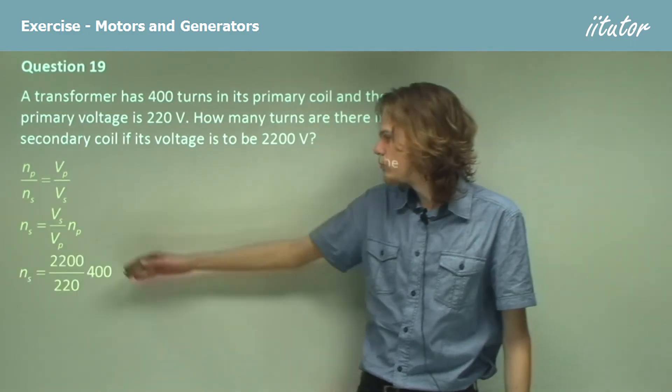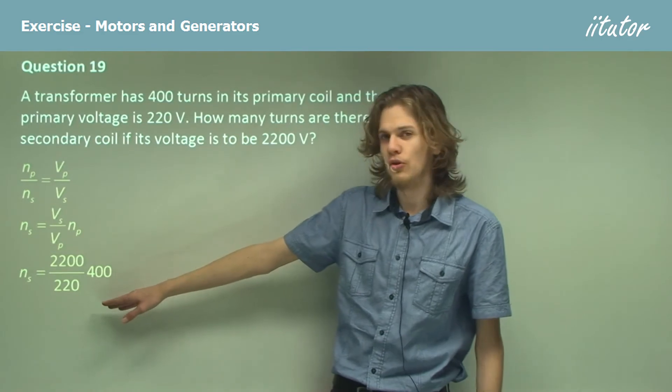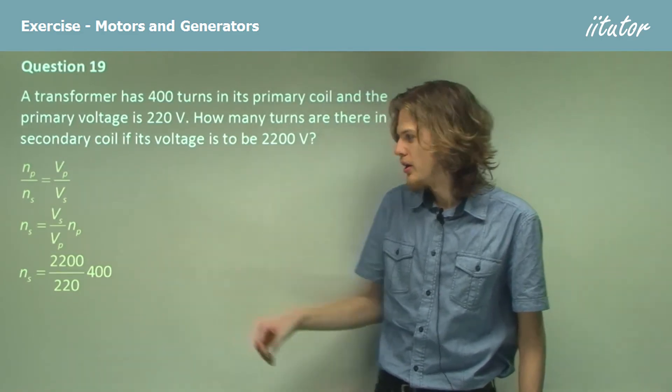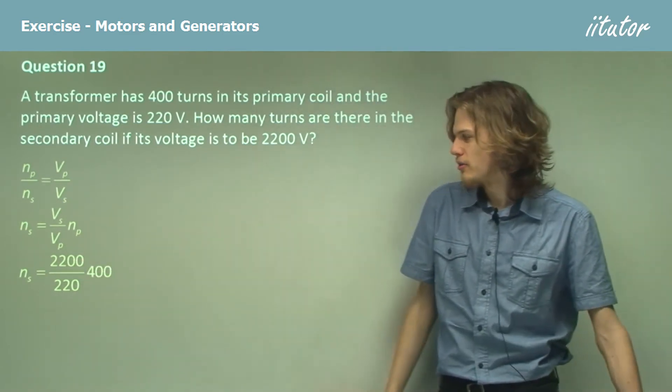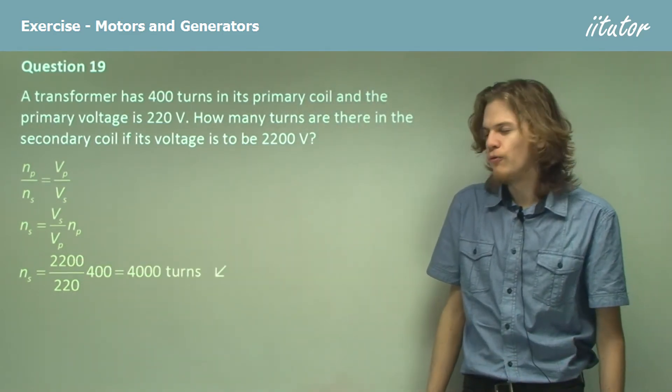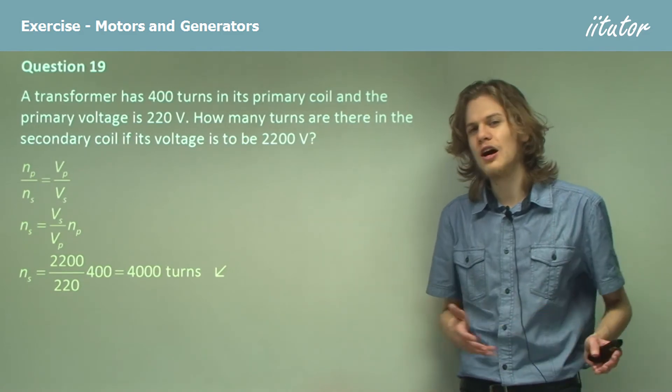Substituting in our numbers 2200, 220 and 400, we can see pretty easily that this is just going to cancel out and become 10. So our answer is 4,000 turns or 10 times 400.